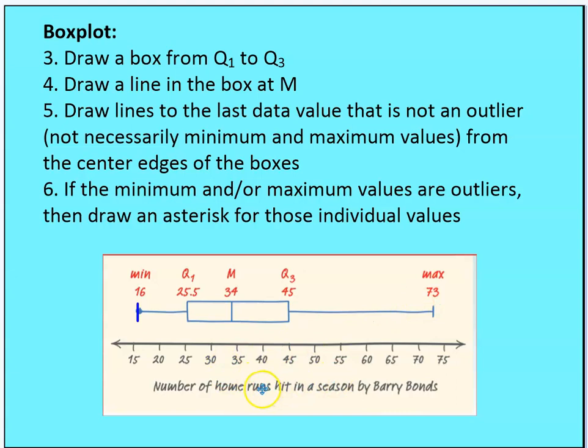This is a list from your book of the number of home runs hit in a season by Barry Bonds by season — a maximum of 73 home runs hit.